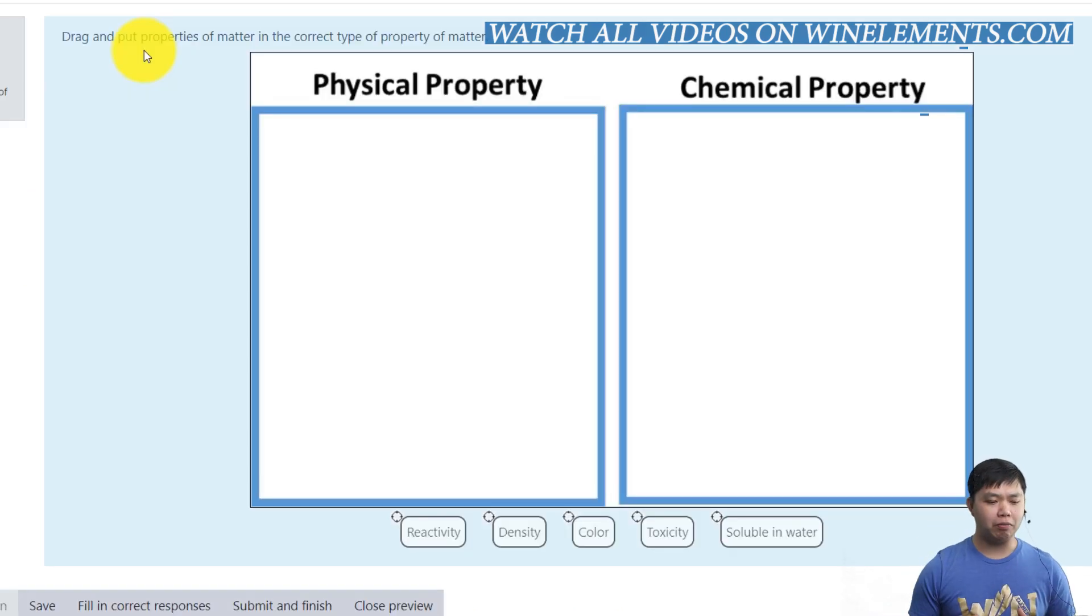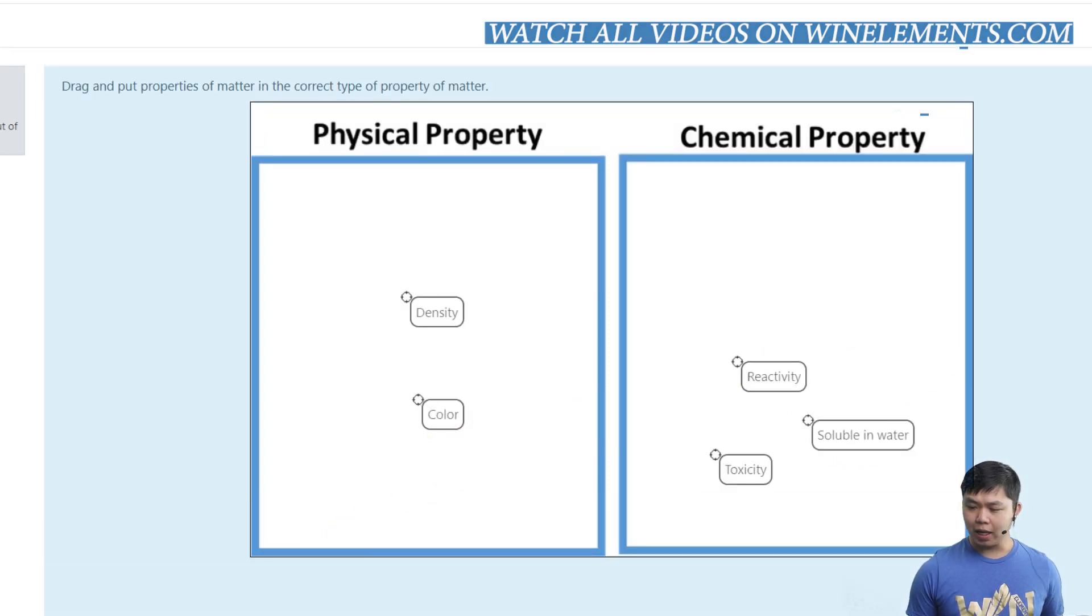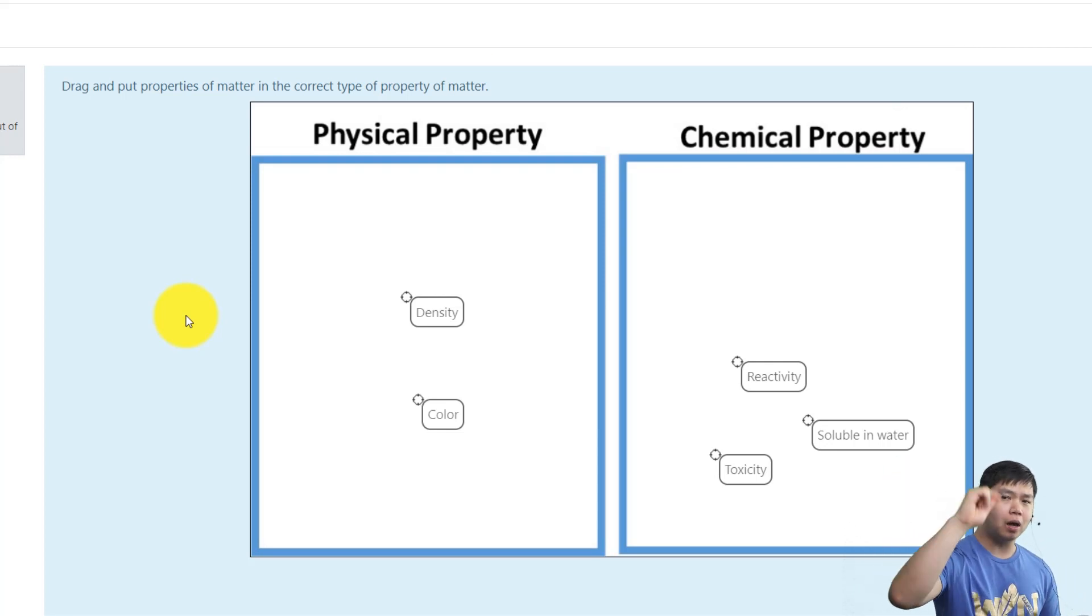So let's go do an example problem. In this question, we are going to drag and drop or put properties of matter in the correct type of properties. So we have reactivity, that is chemical properties, density, that is intensive property, color, also intensive properties of physical properties, and toxicity, and soluble in water, and check. There you go. That's it. That's all we have to do. So it's really easy to distinguish between physical and chemical properties, but the key is knowing how we can use this in later chemistry concepts. And we'll see you next time on another exciting chemistry lesson.